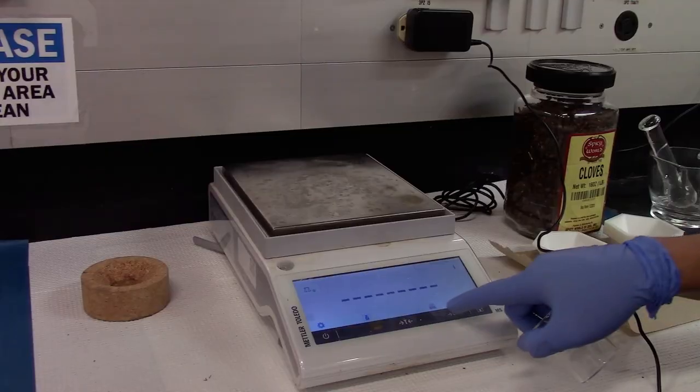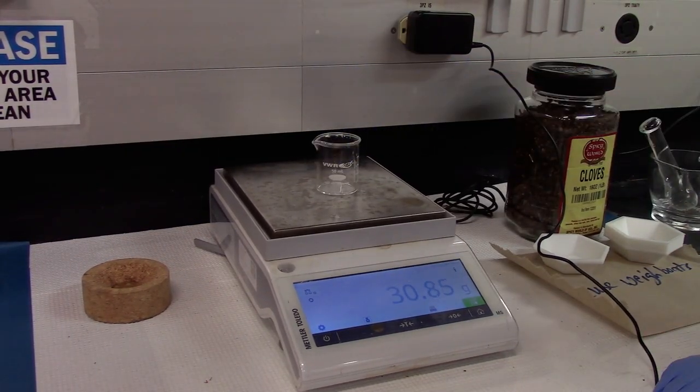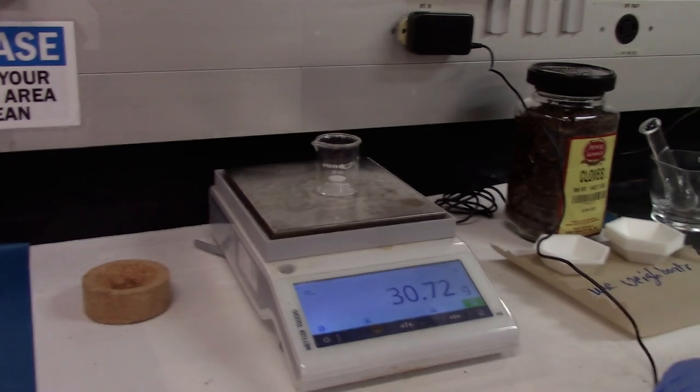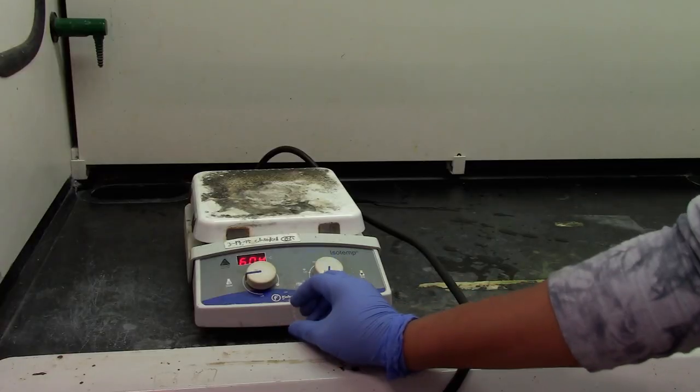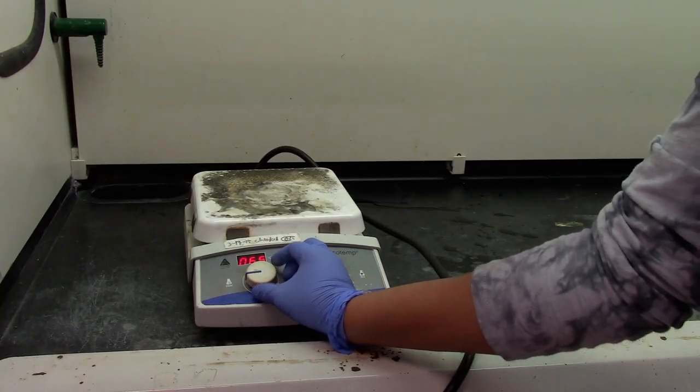Go ahead and weigh a clean, dry 50 ml beaker. And set up a hot plate at about 75 degrees Celsius.